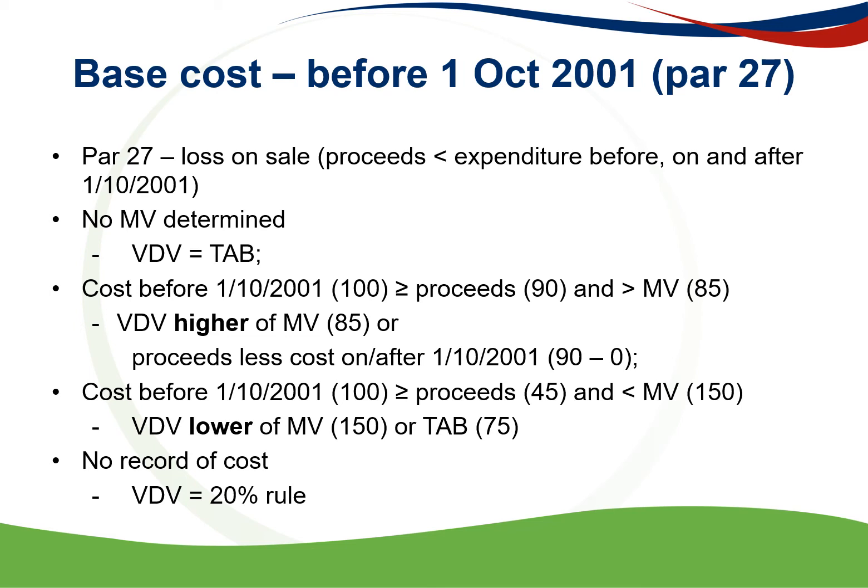The third instance: the cost before 1 October 2001 is 100, which is greater than or equal to the proceeds of 45, and it is smaller than the market value. So the cost before 1 October 2001 is smaller than the market value of 150. Then the valuation date value will be the lower of the market value of 150 or the time apportionment base cost. Here the time apportionment base cost is 75, so 75 will be used as it is lower. Where there were no records kept of any costs, the valuation date value will be based on the 20% rule.